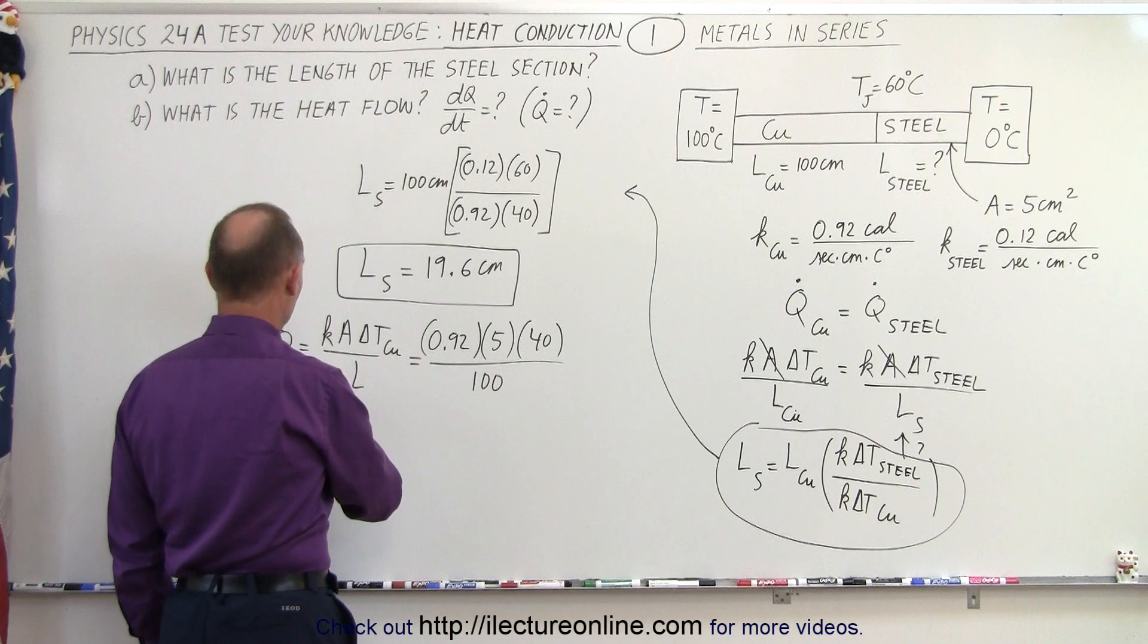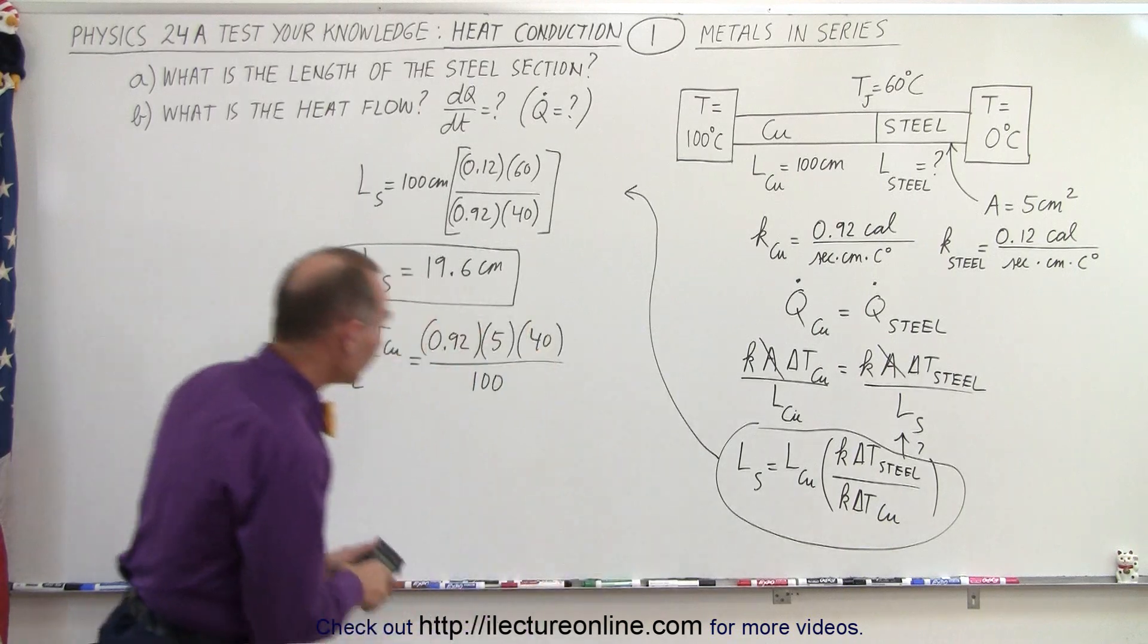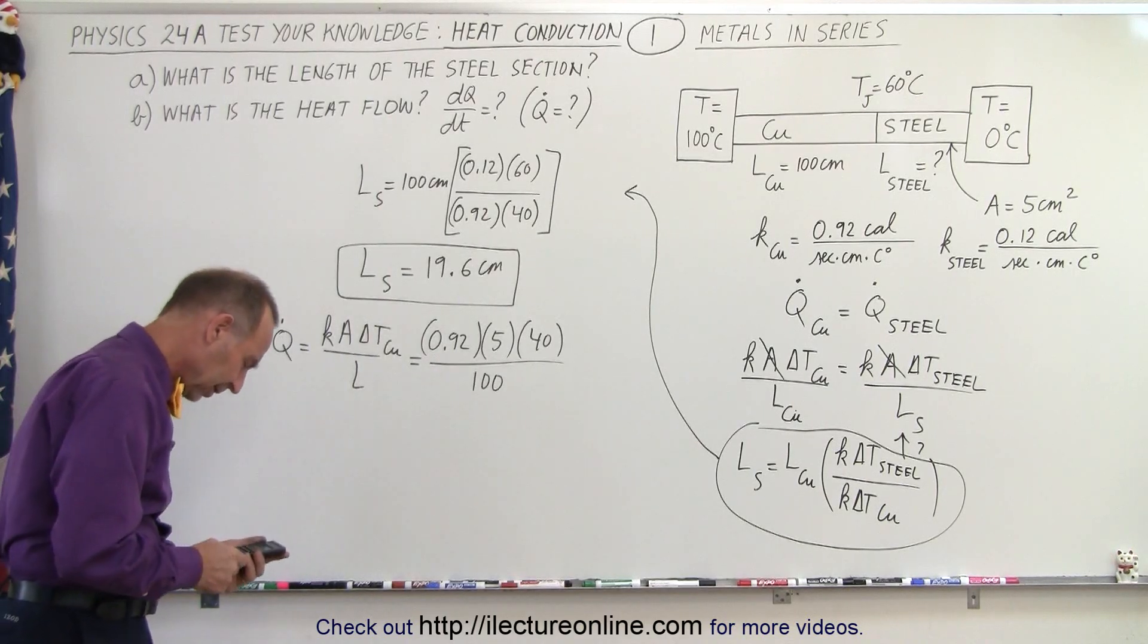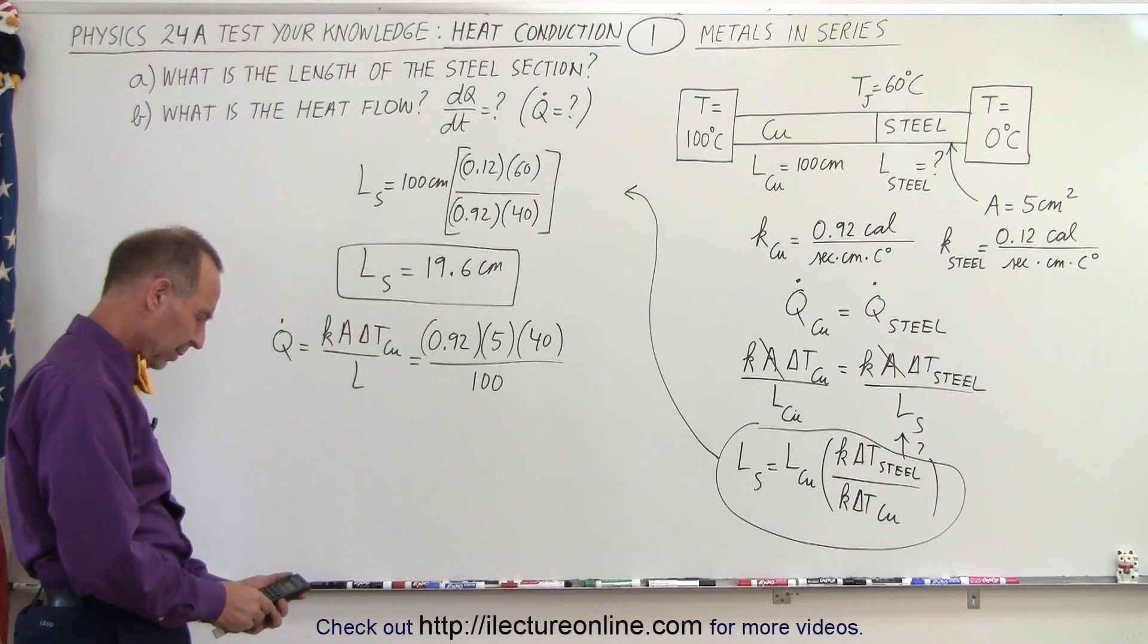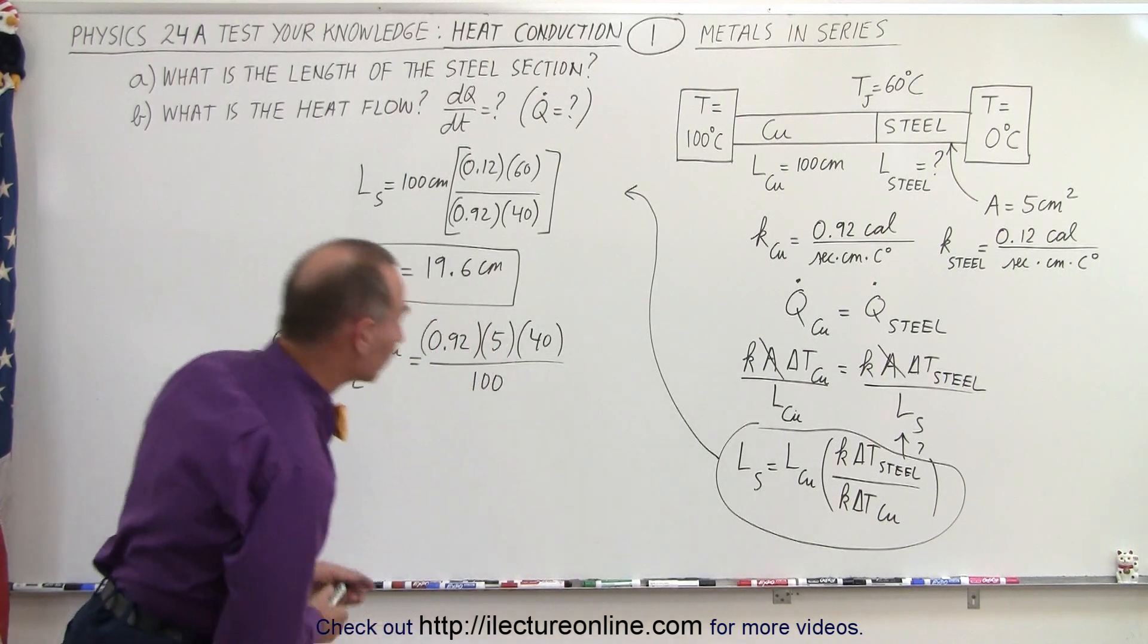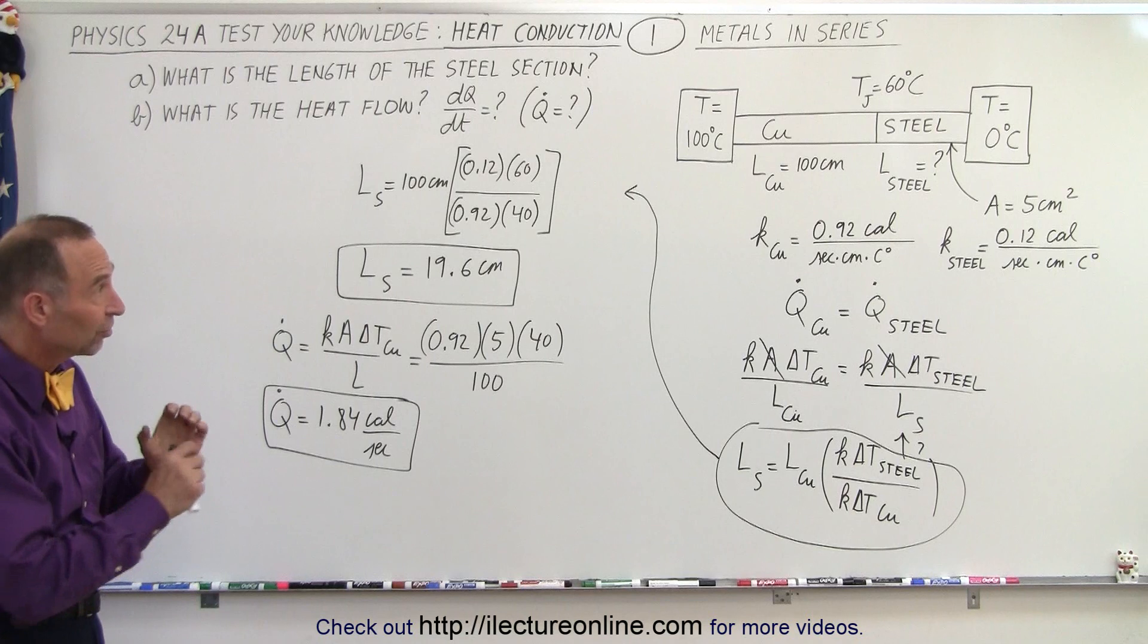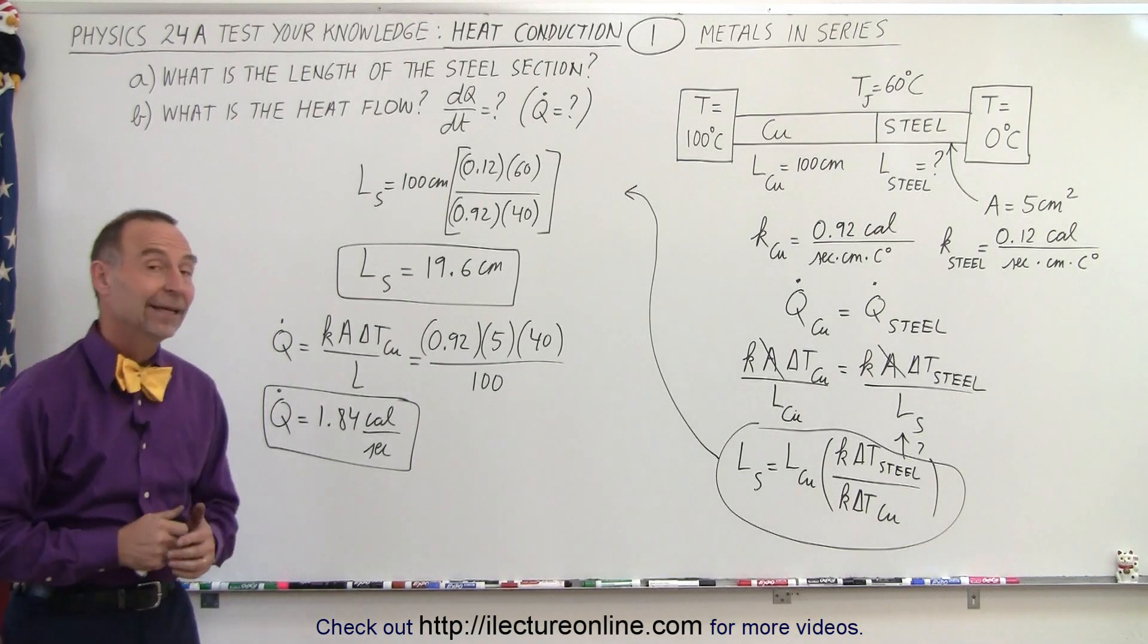So we have 0.92 times 5 times 40 divided by 100, and that gives us 1.84 calories per second, and that will be the amount of heat flowing through the copper and the steel section from the 100 degrees reservoir to the zero degree reservoir. And that is how it's done.